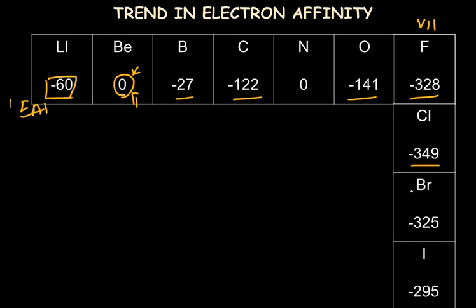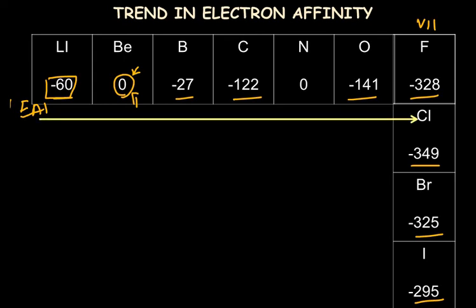Looking at trends across the period and down the group: there is an average increase in the exothermic value of electron affinity across the period, with some exceptions. We cannot fully explain every exception, but there is an overall increase in electron affinity values — which are exothermic — going across a period.